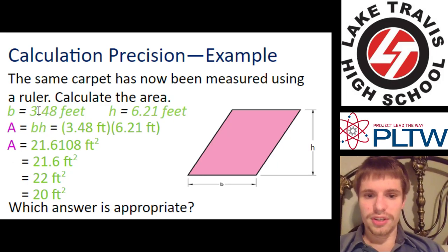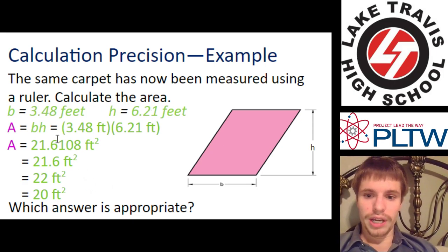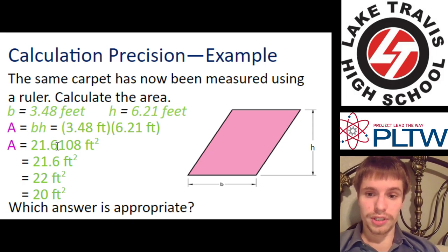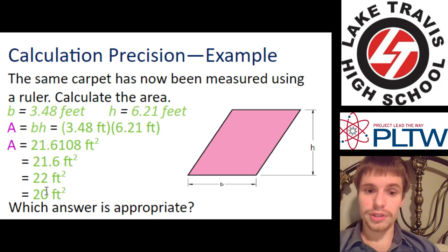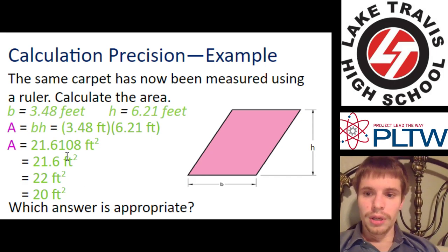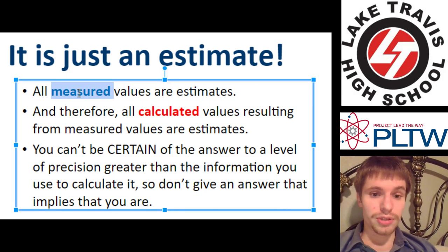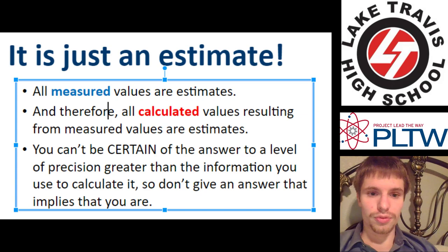If we have this instead, 3.48 and 6.21, we have all these potential answers here. 21.6, 21.08, 21.6, 22 rounded up to two decimal places or 20 rounded up to one digit. Which answer is most appropriate? To answer this question, you need to look at how many digits we have because we're multiplying. How many digits do we have? We have three digits, so we need to round to three digits. Just remember, whenever you calculate, it's just an estimate because we've done our measurements and measurements are all estimates too. So the calculation should be an estimate as well.